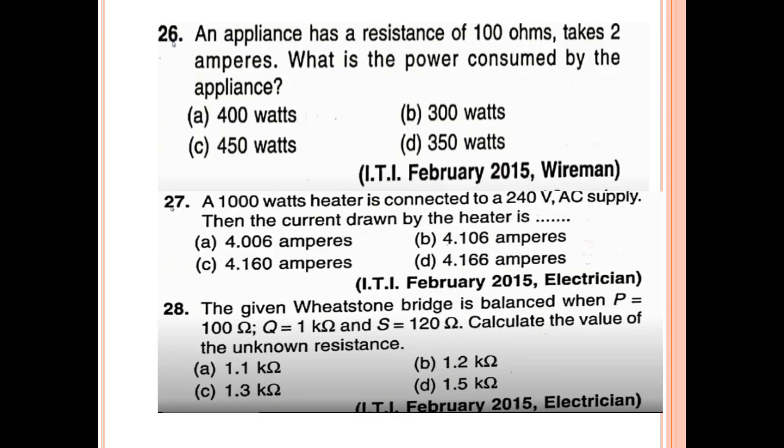26th question: An appliance has a resistance of 100 ohm and takes 2 ampere. What is the power consumed by the appliance? The answer is A: 400 watt. Power equals I squared R, which is 2 squared into 100 equals 400 watt.